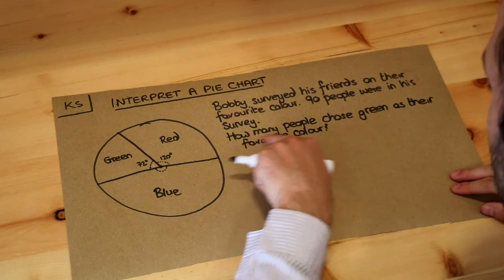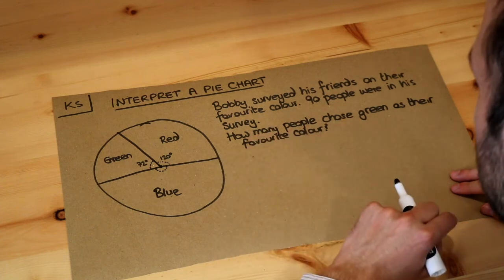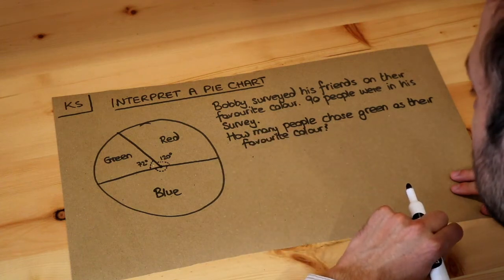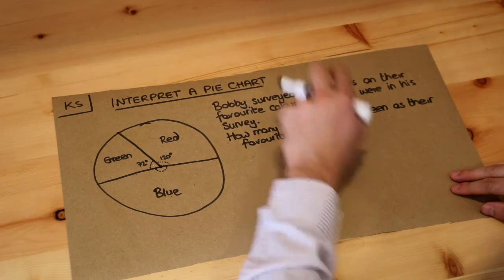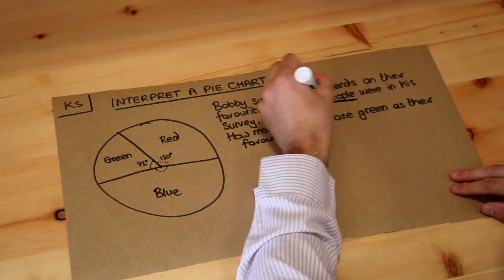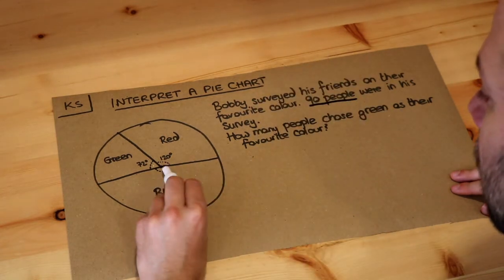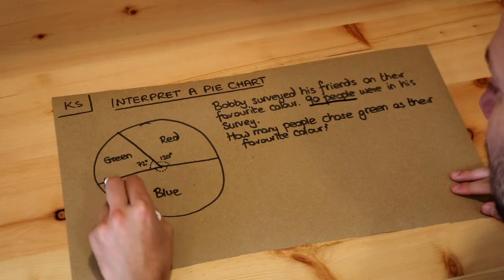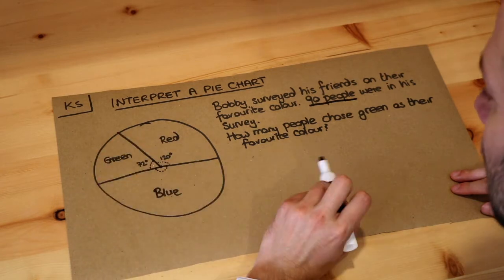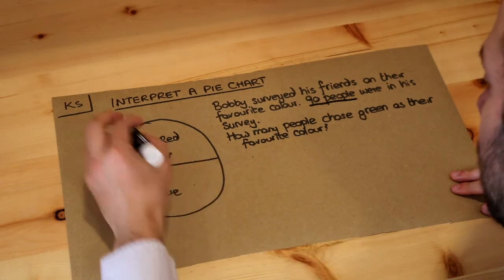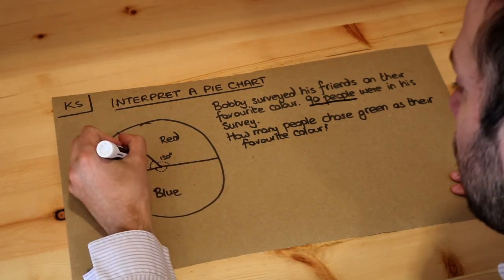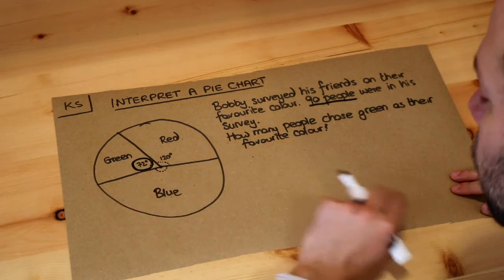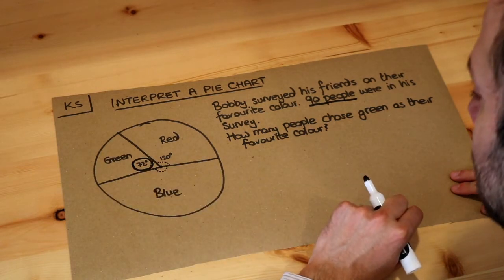Now we want to know how many people chose green as their favourite colour. We know there are 90 people in total. I've given the angle of this slice of the pie chart for green, so we need to use this 72 degrees to work out how many people said green.